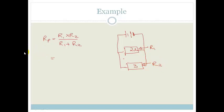So, if we use this equation, we've got 2 times 3 over 2 plus 3, which is 6 over 5, which is 1.2 ohms. So, it does work.